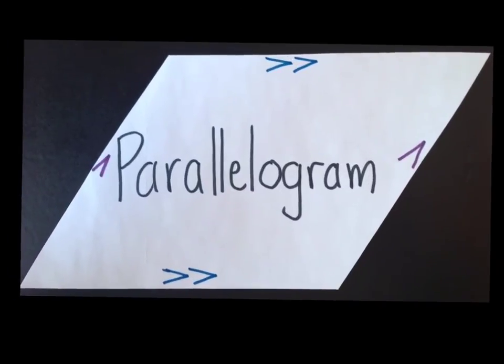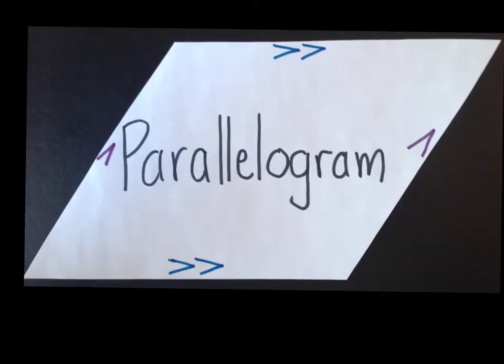The next quadrilateral is a parallelogram. A parallelogram is pretty easy to remember because it's all in the name — the opposite sides are parallel to each other. All parallelograms are trapezoids because they have one pair of opposite sides parallel, and all trapezoids are quadrilaterals.